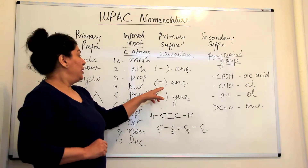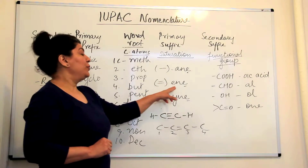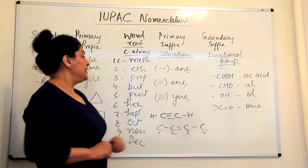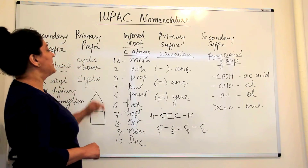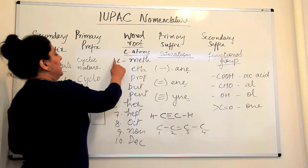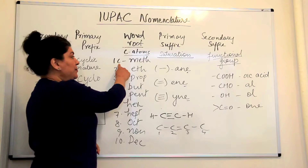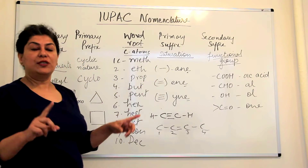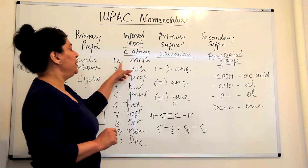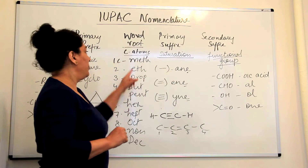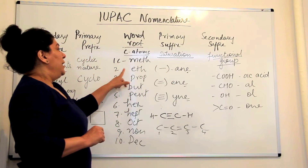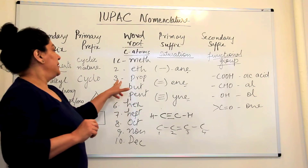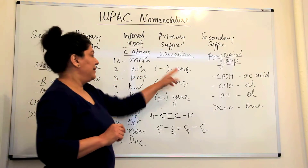If the compound has a double bond, it is known as an '-ene,' and if it has a triple bond, it would be known as '-yne.' For example, if there is one carbon atom with four single bonds to four hydrogens, the compound would be known as methane. If there are two carbon atoms with all single bonds, the compound would be known as ethane.